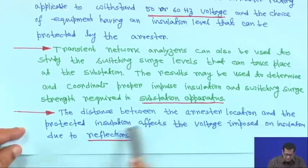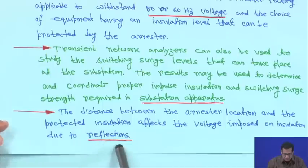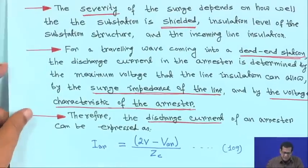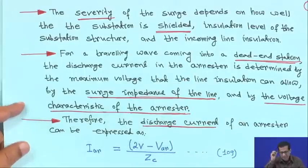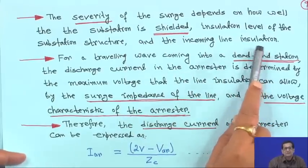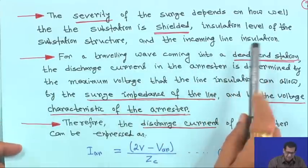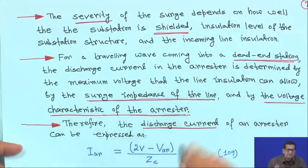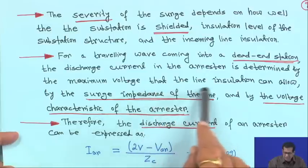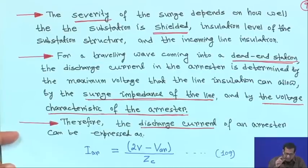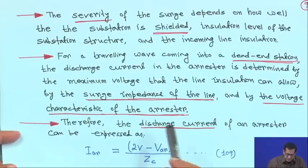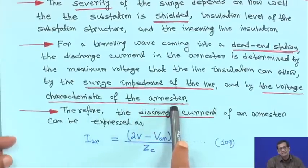The distance between the arrestor location and the protected insulation affects the voltage imposed on insulation due to reflections. The severity of the surge depends on how well the substation is shielded — that is, the insulation level of the substation structure and incoming line insulation. For a traveling wave coming into a dead-end station, the discharge current in the arrestor is determined by the maximum voltage the line insulation can allow.